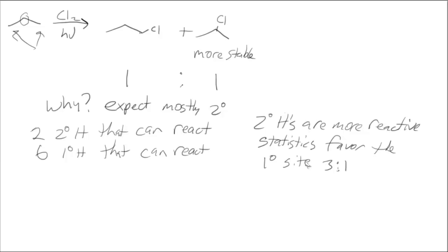There's a preference for secondary because while we expect statistically to get three to one, it's actually only one to one, which says that the secondary is definitely more stable.